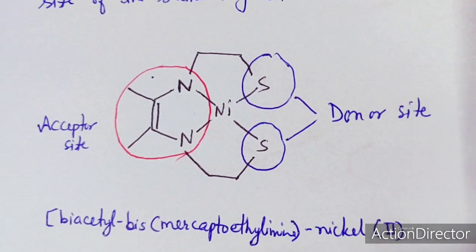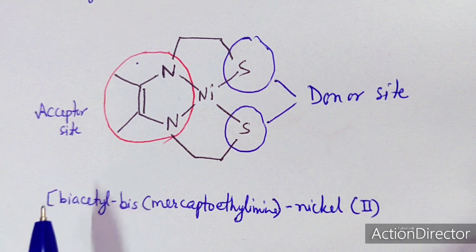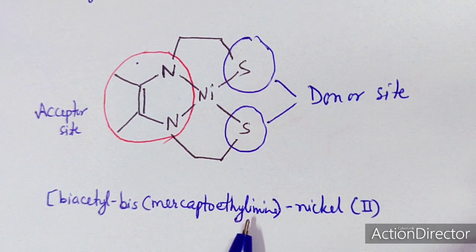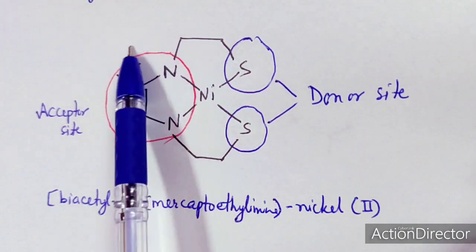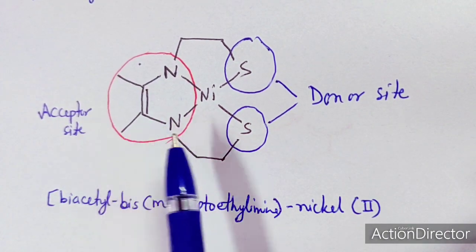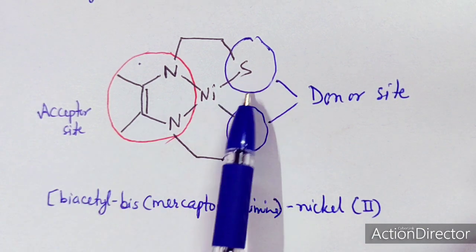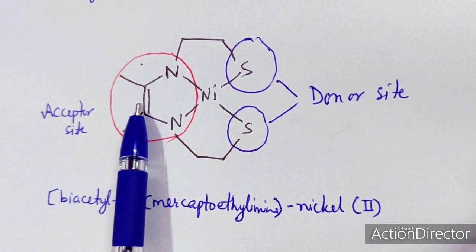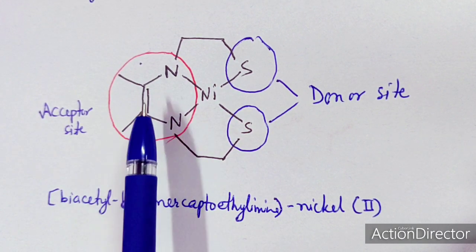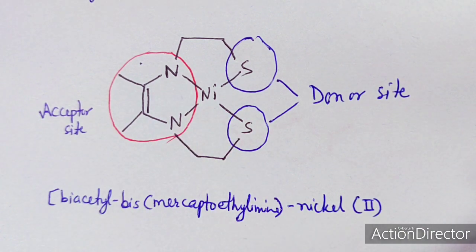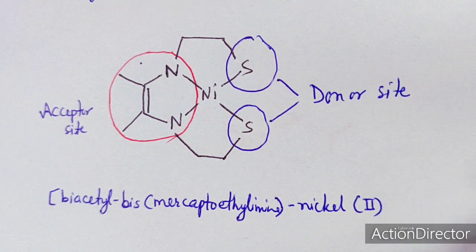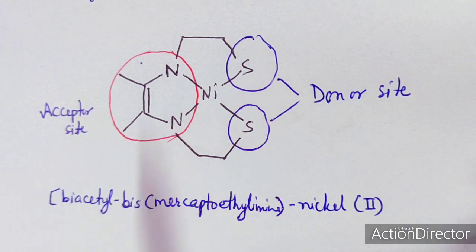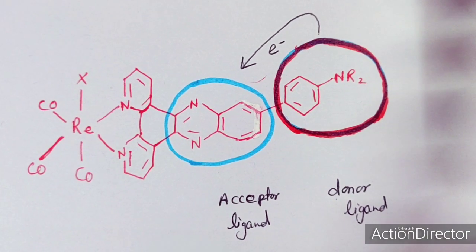An example is a nickel complex — biacetyl bis(mercaptoethylamine)nickel(II). In this complex, one part is the acceptor site and the thio part serves as the donor site. The donor site donates its charge to the acceptor part of the ligand, causing the compound to appear colored. The color of the compound is due to this intra-ligand charge transfer occurring within the same ligand.